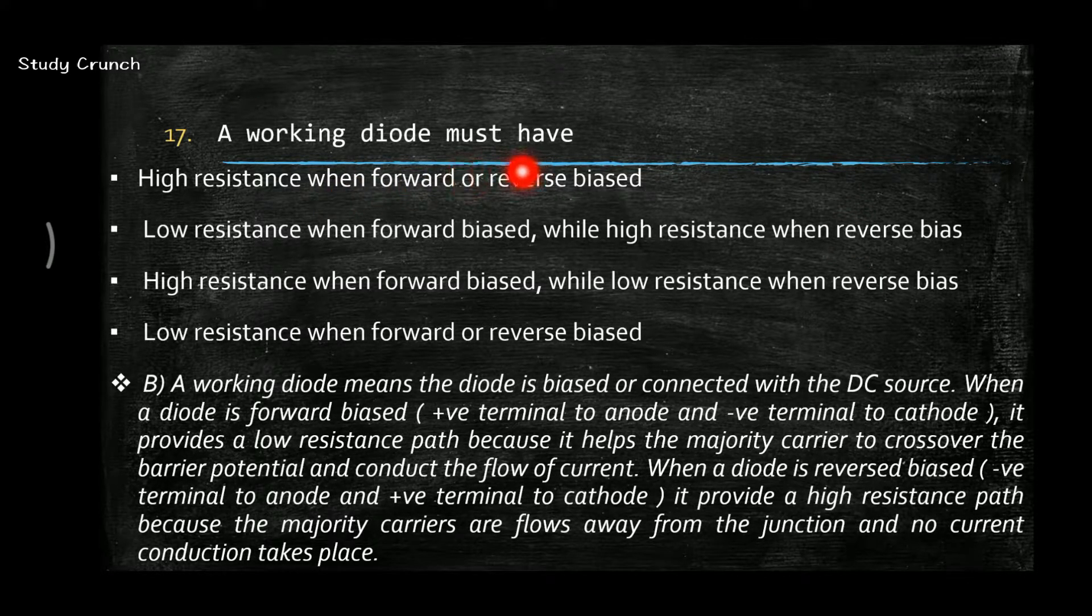Next, a working diode must have low resistance when forward biased while high resistance when reverse biased. Working diode means that the diode is biased or connected with a DC source. When a diode is forward biased, i.e. positive terminal is to anode and negative to cathode, it provides a low resistance path because it helps the majority carriers to cross over the barrier potential and conduct the flow of current. When a diode is reverse biased, it provides a high resistance path because majority carriers are flown away from the junction and no current conduction can take place.